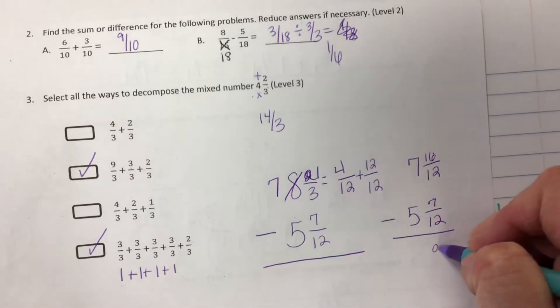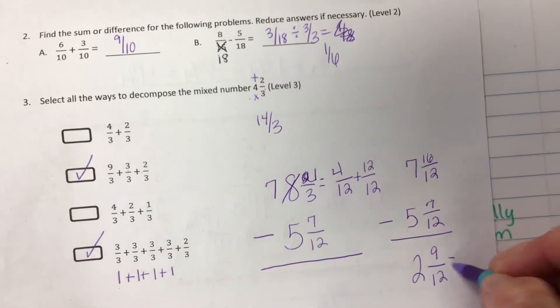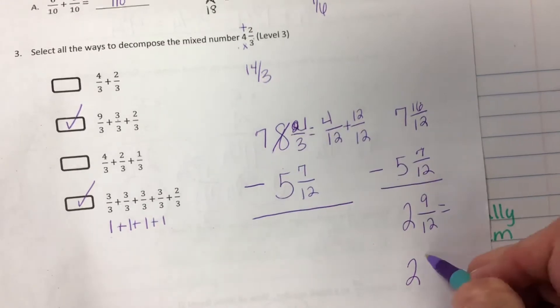Sixteen minus seven is nine twelfths. It's two and nine twelfths which can be reduced to two and what Harper? Three fourths.